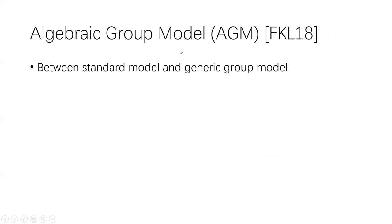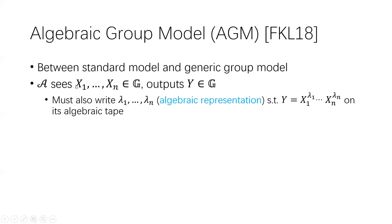The algebraic group model was introduced much later. It was formalized by Fuchsbauer, Kiltz and Loss in 2018. It sits between the standard model and the generic group model. An algebraic adversary, whenever it outputs a group element, must also output its so-called algebraic representation, which explains how this group element is computed from the adversary's view. Suppose the adversary's view consists of group elements X1 to Xn. Whenever the adversary outputs another group element Y, it must also output integers Lambda 1 to Lambda n on an auxiliary tape called the algebraic tape, such that Y equals X1 to the power of Lambda 1 times ... times Xn to the power of Lambda n.